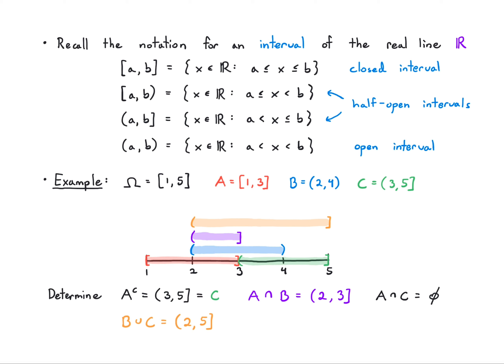For B complement: taking B = (2, 4), the parts missing are on the left and the right, so I have to write this as a union. I get [1, 2] — including 2 because 2 is not in B — union [4, 5] — including 4 because 4 is not in B. Set operations are pretty easy to deal with; you may just need to play with a few examples to get familiar with them again. They're going to be a big building block going forward, so it's important to internalize this set of operations.